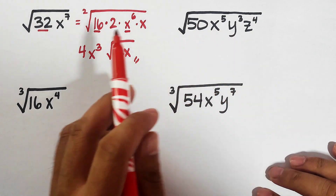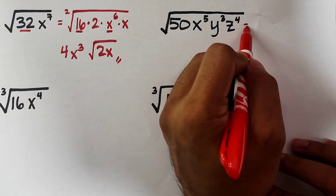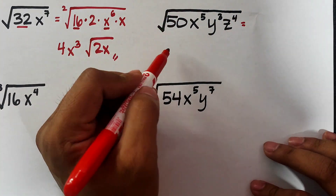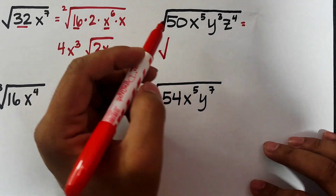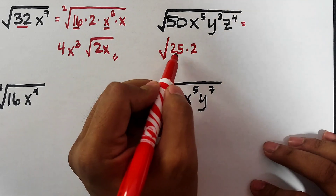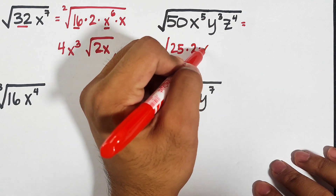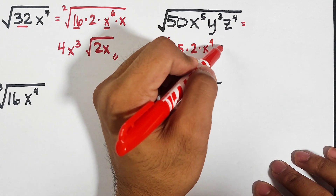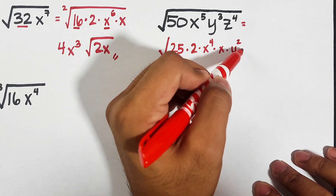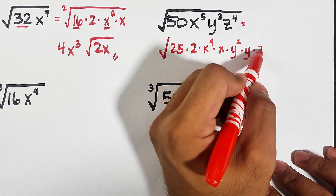Let's move on with item number 5: the square root of 50x to the fifth power y cubed z to the fourth power. We can factor it out like this: 50 as 25 times 2 — 25 is a perfect square. For x to the fifth power, factor as x to the fourth power times x. For the y variable, y squared times y. For z to the fourth power, this is already a perfect square so we don't need to factor it out.